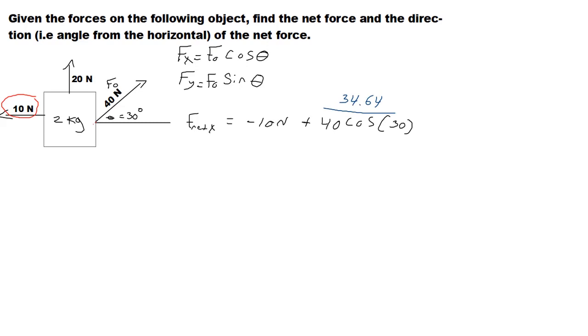Well, I got positive 20 up. Up is positive by convention, and this is also up, and this is going to be 40 sine of 30.